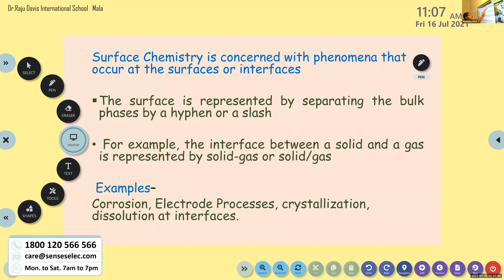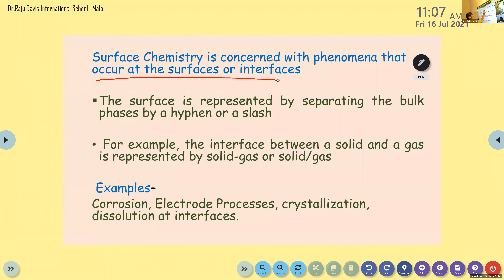Surface Chemistry is concerned with phenomena that occur at the surfaces or interfaces. What do you mean by interface? In between two phases, right. Surface Chemistry is mainly concerned with the phenomena that occur at the surfaces or interfaces.